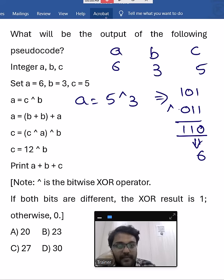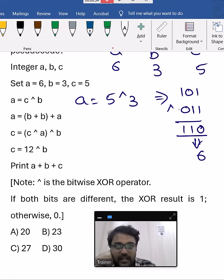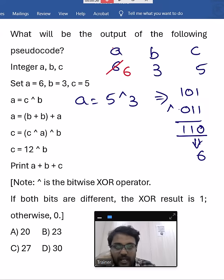So A is updated to 6. Already A is 6, now again it is 6 only, no issues with that. Next step is A equal to B plus B: value 3, B value 3, B plus B plus A value 6. It becomes 12. A is updated to 12.